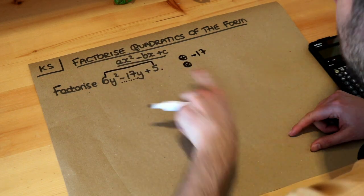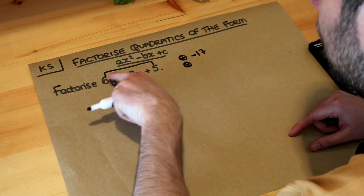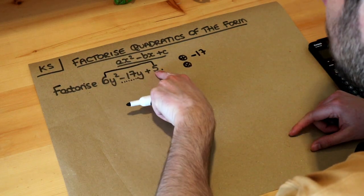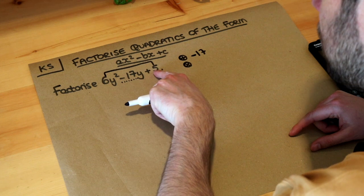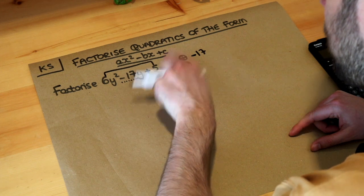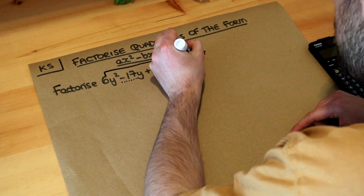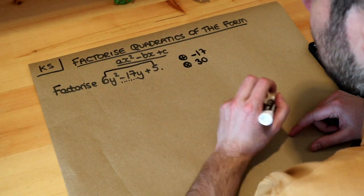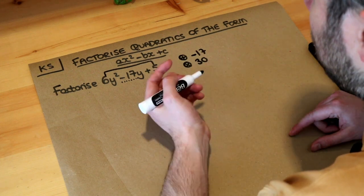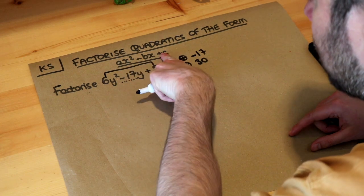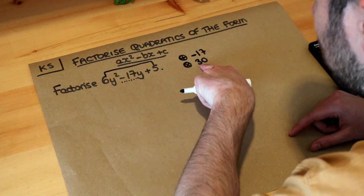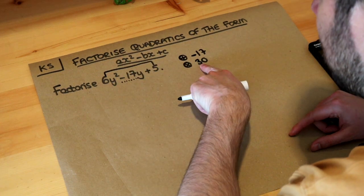We also need two numbers that multiply to give the first times the last number — not just the last number, the first times the last. So six times five which is 30. This is sometimes called the AC method because we just did a times c.